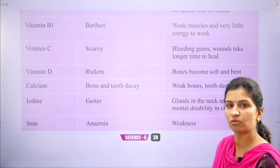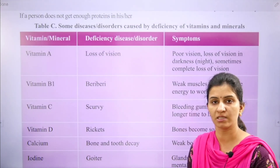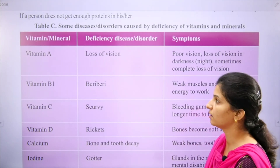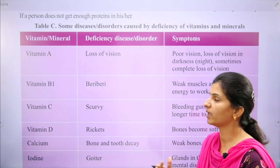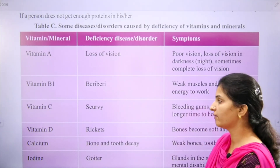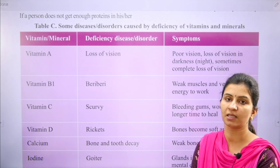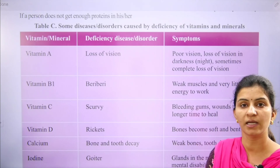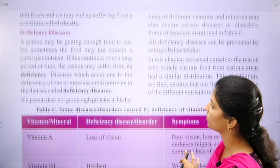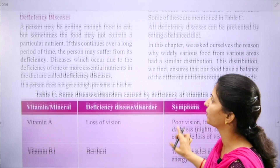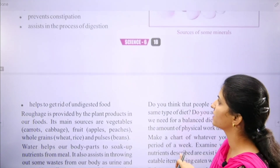For vitamin A, you should consume papaya and pumpkin. Yellow fruits and vegetables are good for vitamin A. Green leafy vegetables for vitamin A, and citrus fruits like lemon and amla for vitamin C. For vitamin D, consume milk and dairy products.